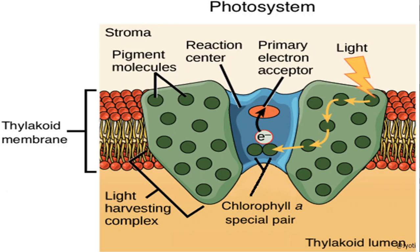First, we need to know what a photosystem is. Inside the thylakoid there is a light harvesting complex, which harvests light. The thylakoid membrane is exposed to sunlight, and all the pigments (four major pigments discussed in the previous session) are located there. All these pigments harvest light, which is why this is called the light harvesting complex. The photosystem is a part of the light harvesting complex, and there are two types: photosystem 1 and photosystem 2.